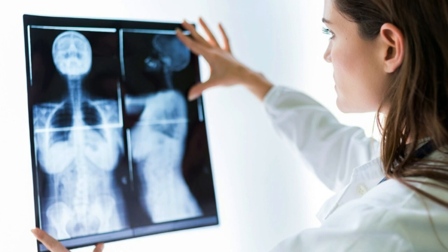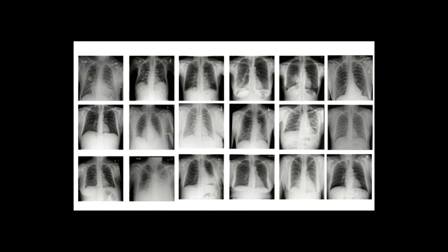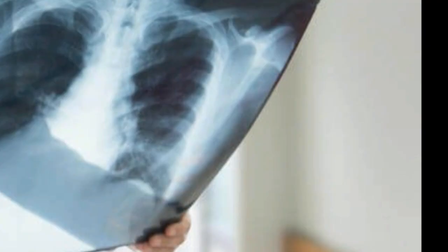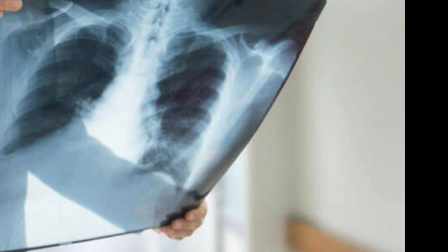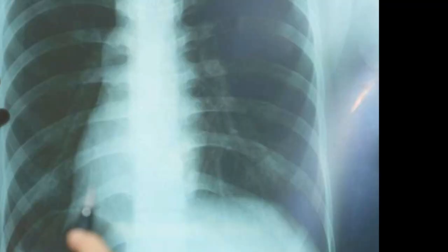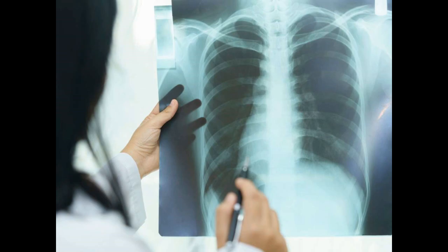One way to detect pneumonia is by analyzing the X-ray report of a pneumonia-affected patient's lungs. There are certain characteristics present in a pneumonia-affected patient's lungs such as fluid overload, bleeding, volume loss, lung cancer, or post-radiation changes. Sometimes it becomes difficult to figure out those characteristics manually, even for professional health specialists or doctors, which is also a time-consuming and costly procedure.